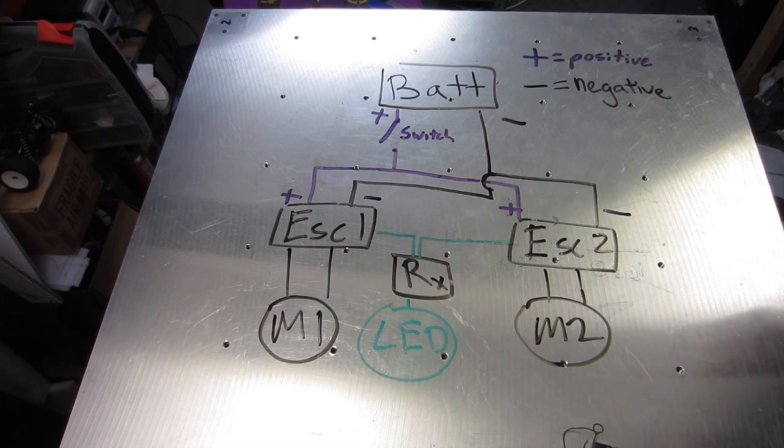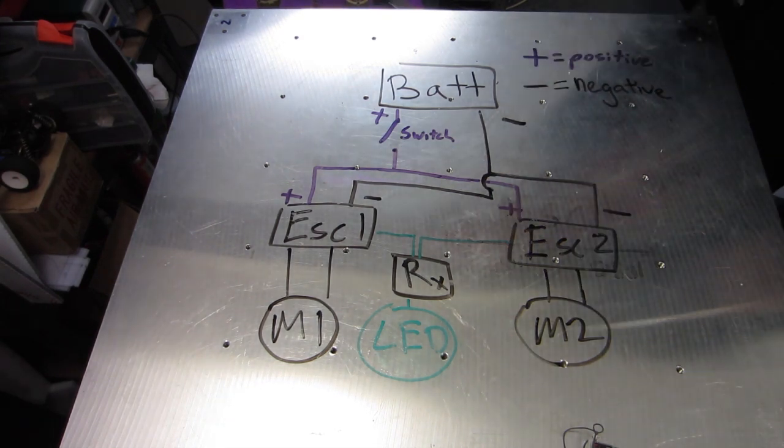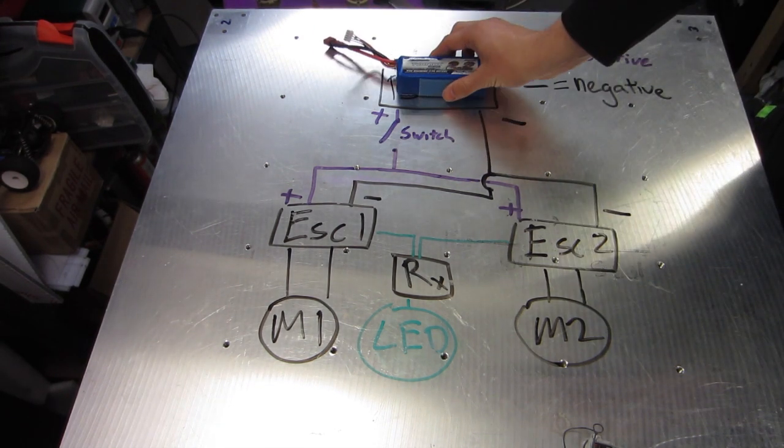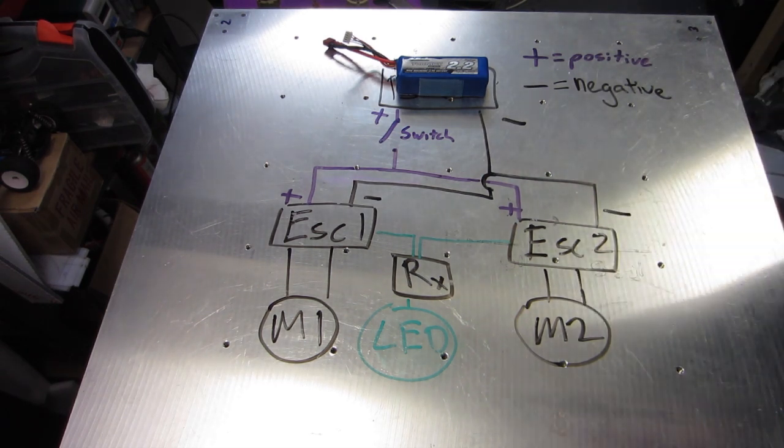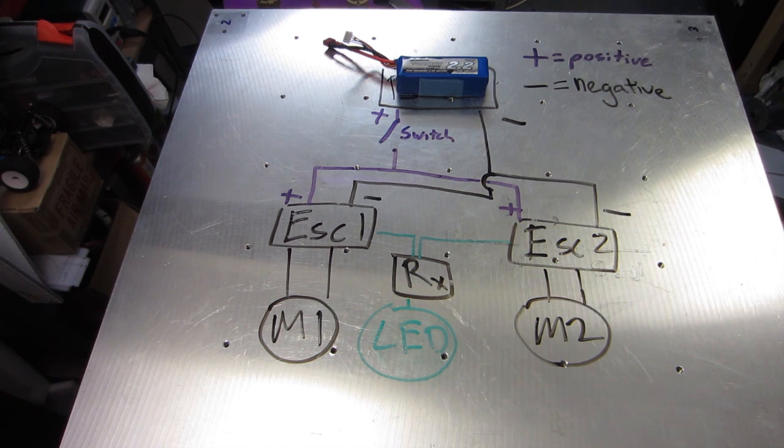For this combat robot platform, for the battery, we'll be using this 2.2 amp hour LiPo. Remember to observe all the safety precautions necessary for LiPo batteries before you use them.